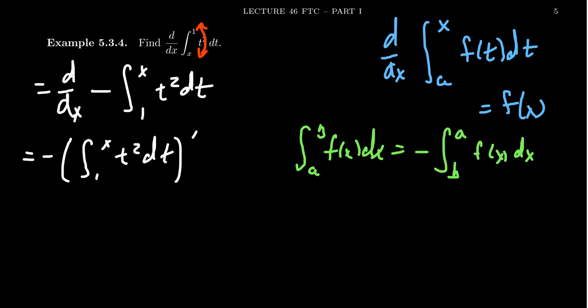So then by FTC1, the Fundamental Theorem of Calculus Part 1, if you take the derivative of an integral where the variable x is on the top and the constant is on the bottom, by that rule, you're going to get negative x squared.